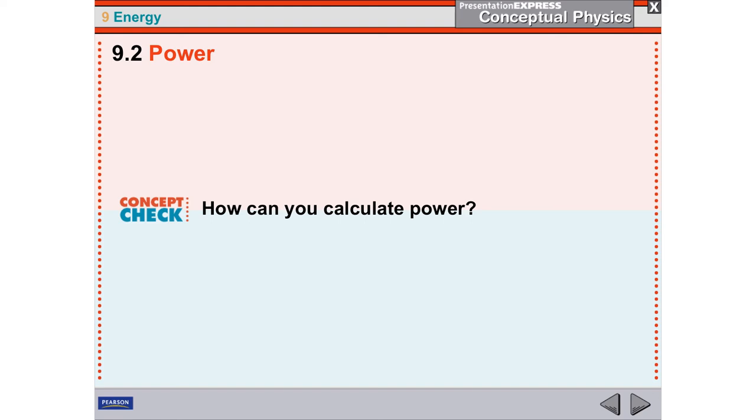How can you calculate power? Power, which is in watts, capital W, is one joule of work done in one second of time.